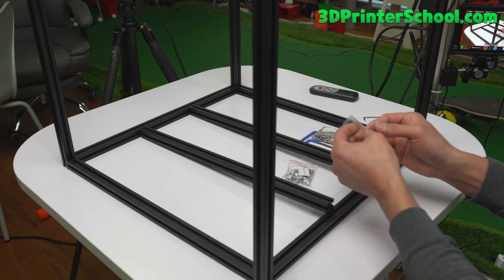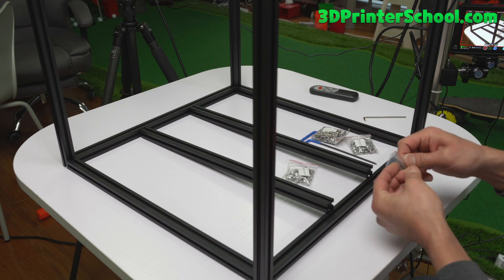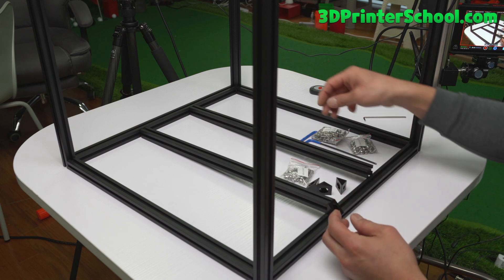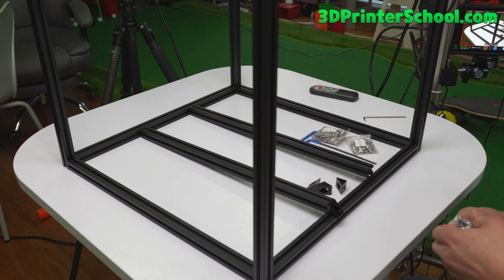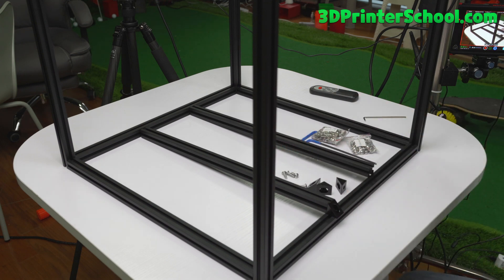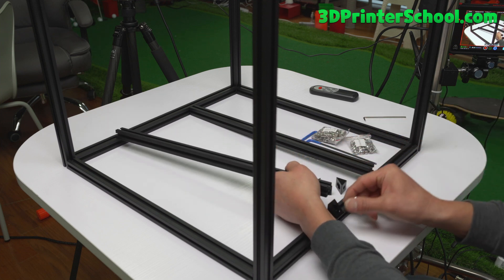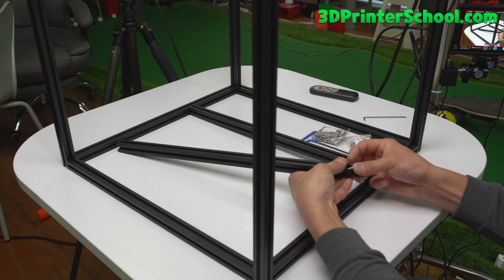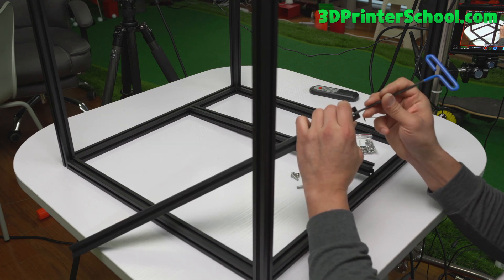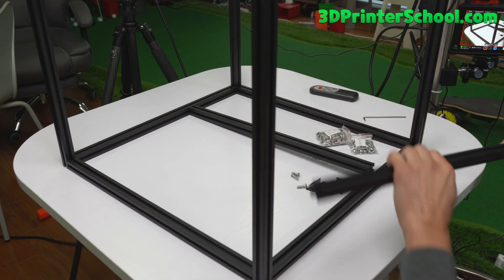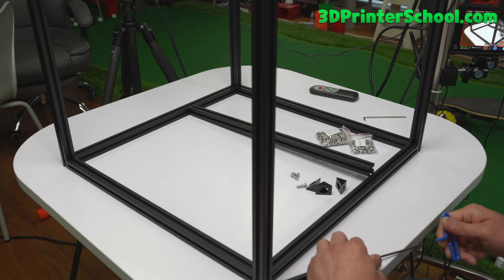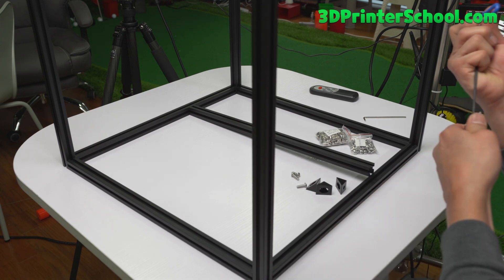First thing we're going to do is go ahead and connect the 90 angle to the ends here using M5-16. You'll need 4 of these, and you can put it aside. So connect one of the ends here. Try to make it square by placing it on your table. It doesn't mean it's super square, but it's nice to have it square.